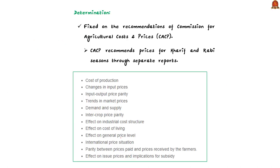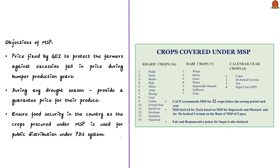I am displaying the determinants of MSP for your reference. Now let us see the objectives of MSP. In simple words, it is the price fixed by the Government of India to protect the farmers against excessive fall in prices during bumper production years. During any drought season, it will provide a guarantee price for the produce. Thirdly, it will ensure food security in the country as the crops procured under MSP are used for the PDS system.